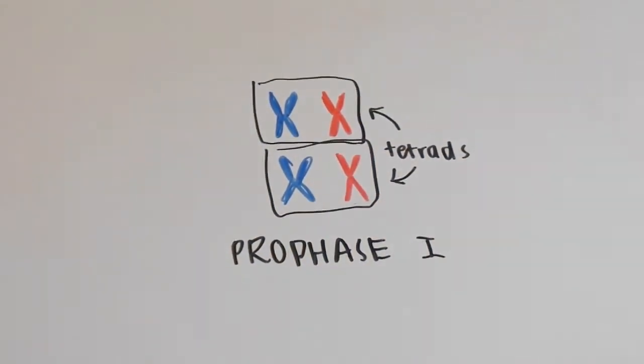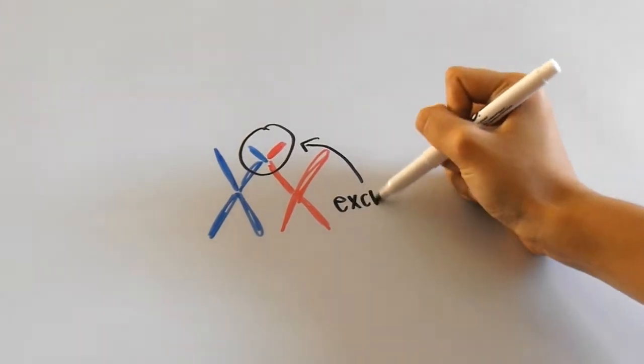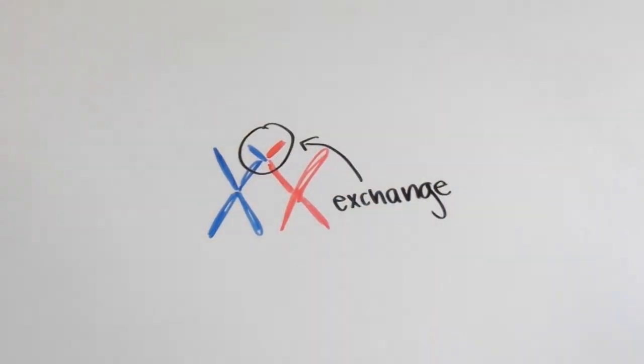The chromosomes are kind of like ragdolls since they're so small and unsteady and they don't necessarily stay as these perfect X shapes. They kind of flop around like this and because this happens, the chromosomes can cross over each other. When crossing over occurs, the chromosomes can exchange genetic material.